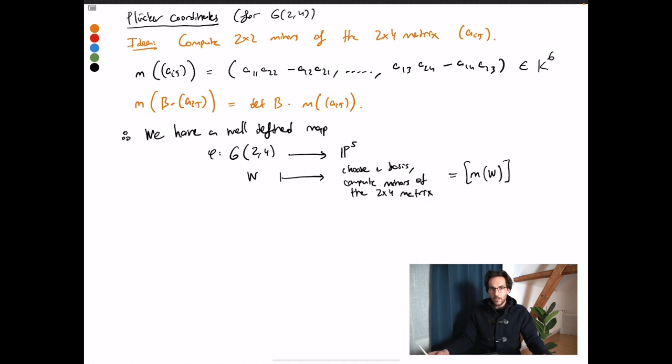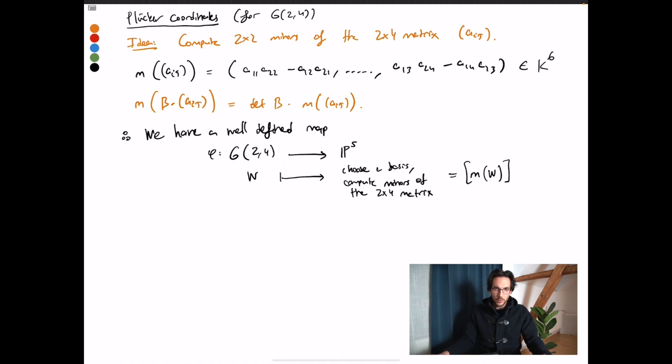And here the end result is independent of the bases chosen for W. So I will just denote it by M(W), the minors of some basis. This is well-defined up to scaling.